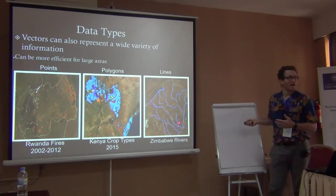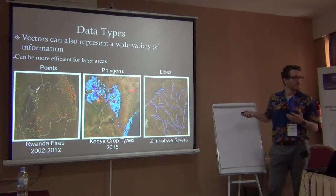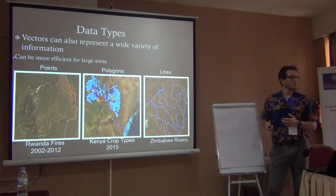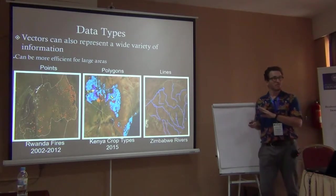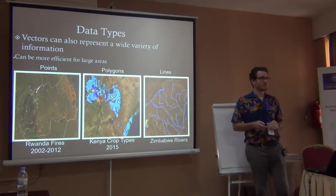We can also use lines — in this case, rivers. So these are the three types of vector data: points, polygons, and lines.